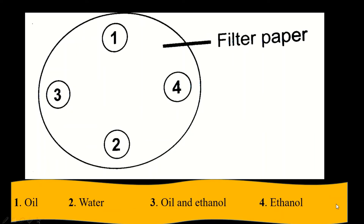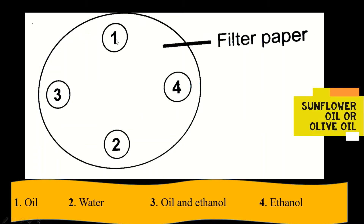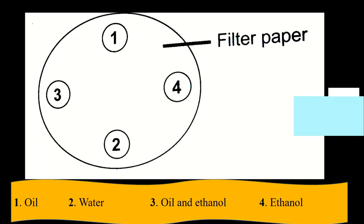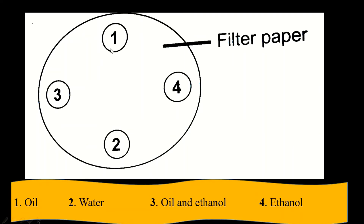Now what should you expect by the end of the day? At spot number one, because this is oil, we know that oil leaves a stain on materials — be it paper or clothes — so there will be a stain left there. At spot number two, this is water. Water does not contain oil, so your filter paper will dry off at spot number two and there will be no stain left.